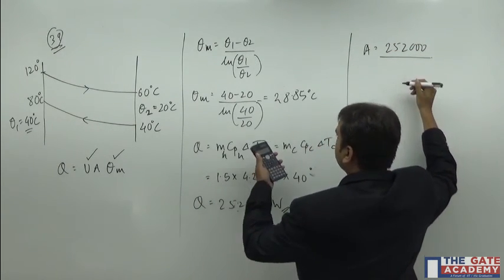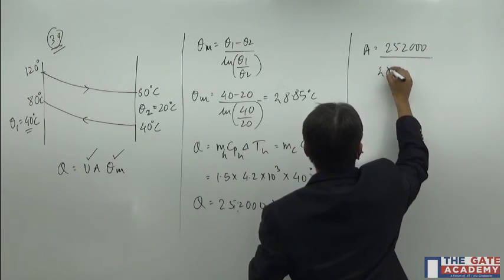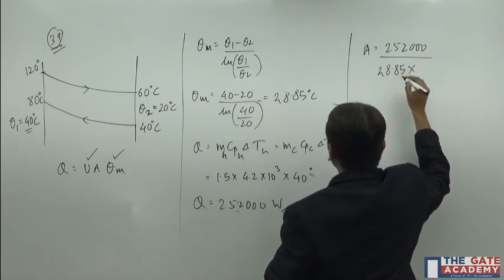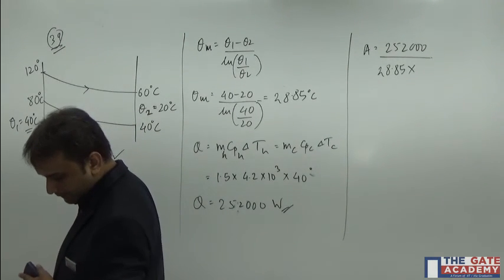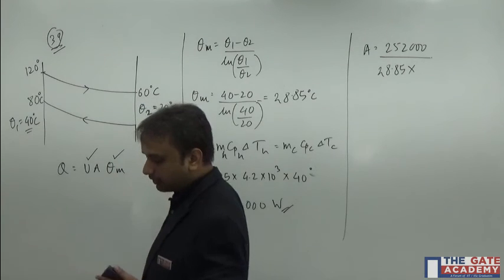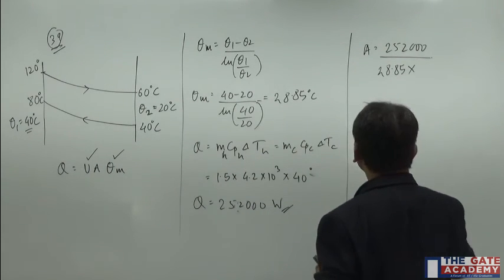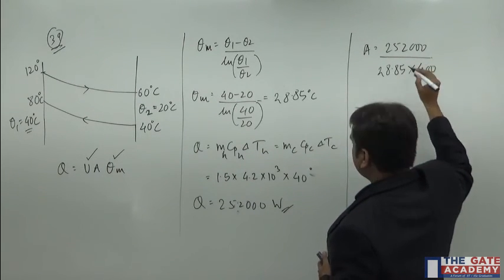Firstly let us write down 28.85, and what is the value for u? U is 400, it is given as 400.